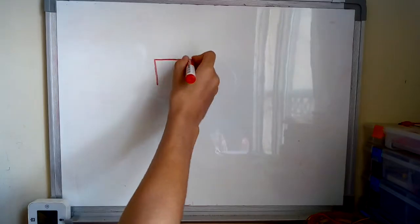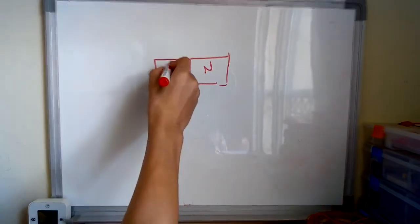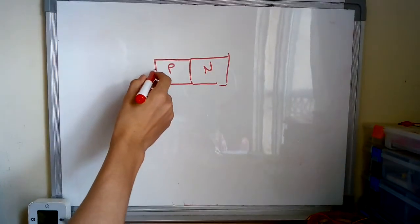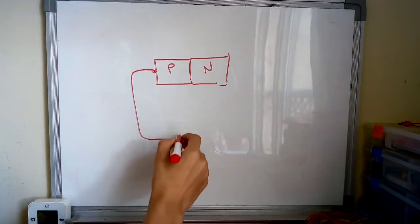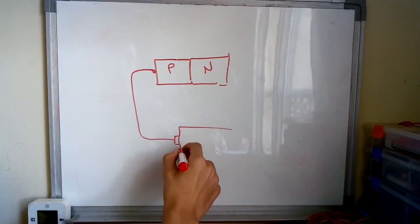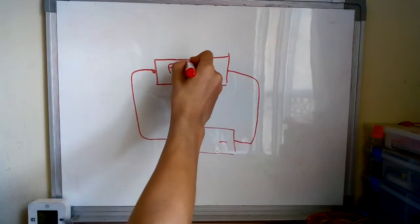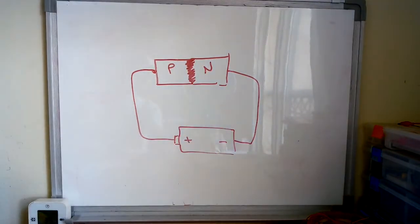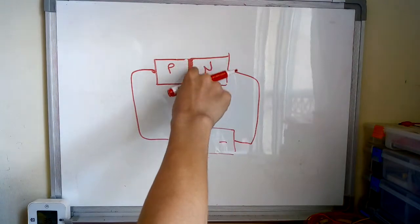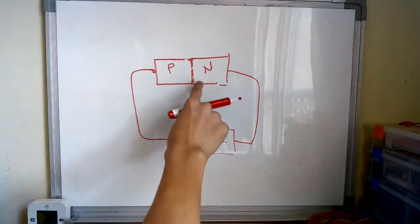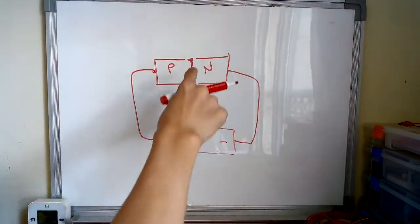This depletion region is what makes the diode work. When you hook up a battery to the diode connecting the positive terminal to the P-type region and the negative terminal to the N-type region, what happens is that the depletion region shrinks and shrinks and shrinks until the electrons could flow through the diode's N and P crystals. And the diode will act just as a wire which has a very low, ideally 0 ohm resistance.